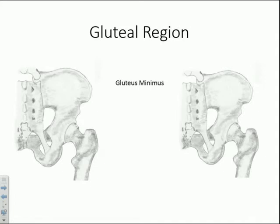Gluteus minimus originates off the outer surface of the ilium, specifically between the anterior and inferior gluteal lines. From there, it attaches to the greater trochanter, but more along the anterior border, so this one runs more to the anterior aspect.